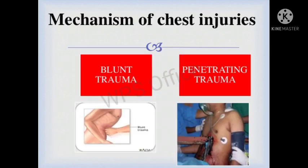The mechanism of chest injuries includes blunt trauma and penetrating trauma. In blunt trauma, there is no skin abrasion and no penetration into the skin; the injured part may be inside but not visible from outside. In penetrating trauma, the object passes through the skin to the underlying organs of the chest, such as in gunshot wounds and knife stabbings.